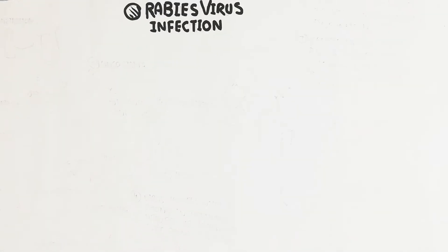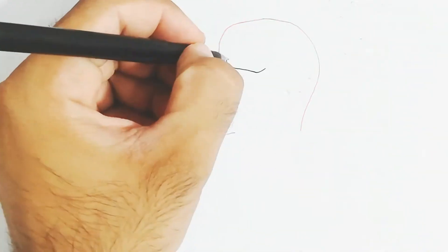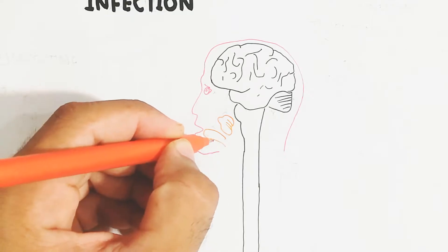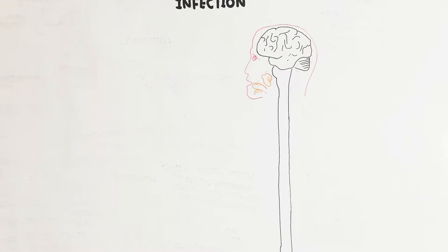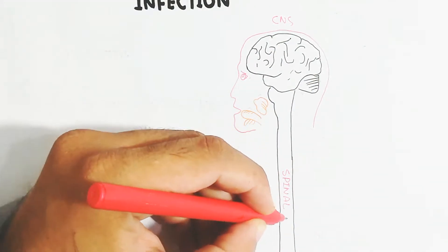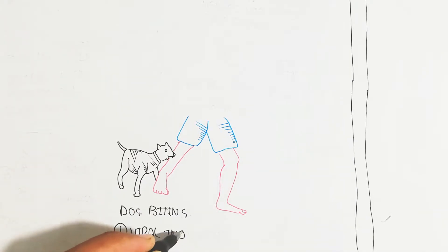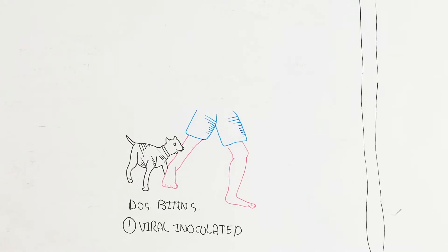When a dog bites, it will transmit the rabies virus. Here is the central nervous system of a person - the salivary gland, tongue, eye, spinal cord, and brain form the central nervous system, while the peripheral nervous system includes everything except the spinal cord and brain. When a dog bites, viral inoculation will occur - this is step one.